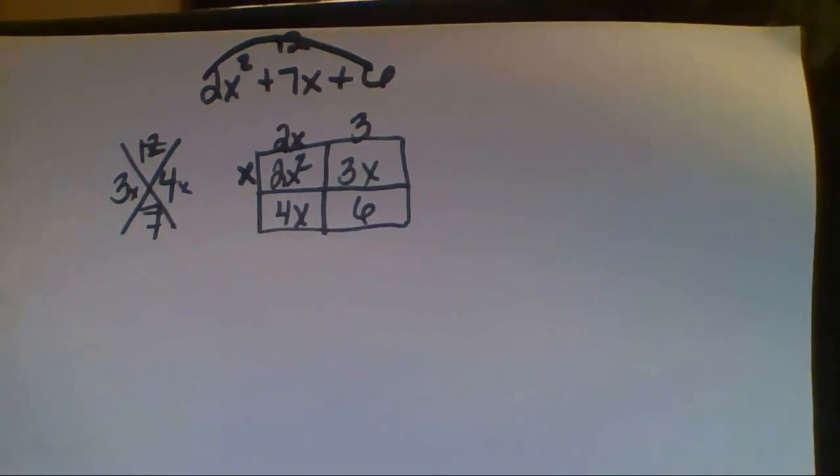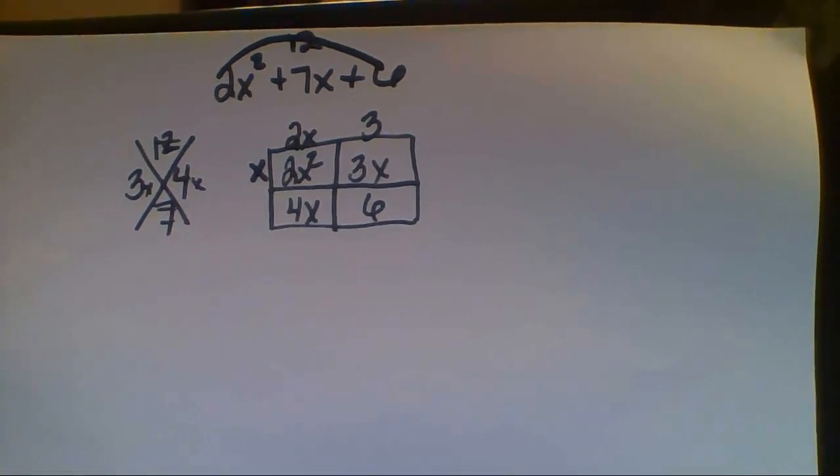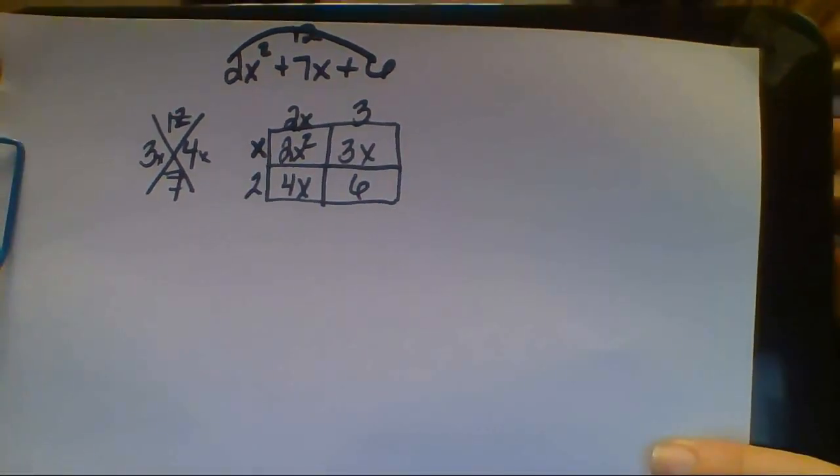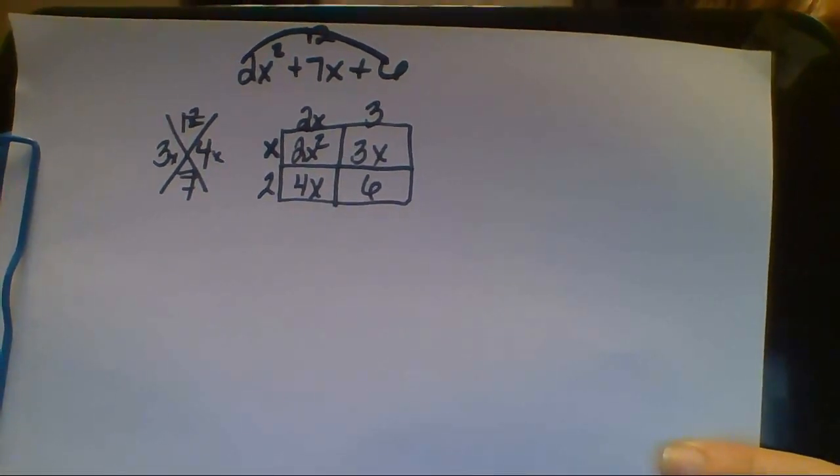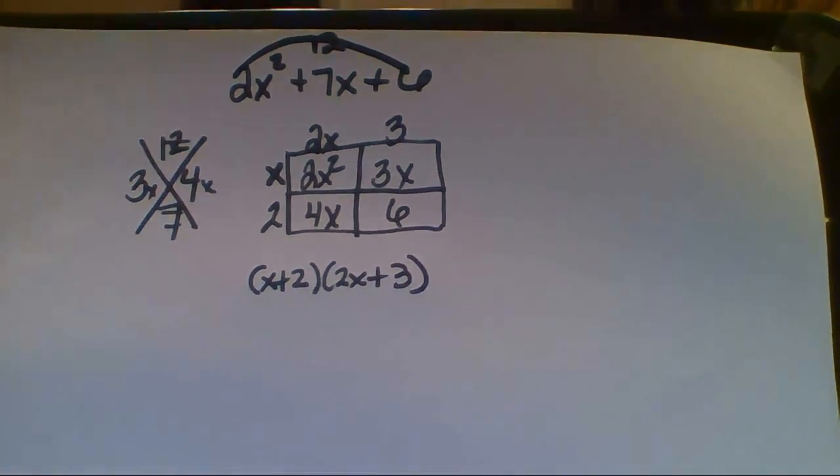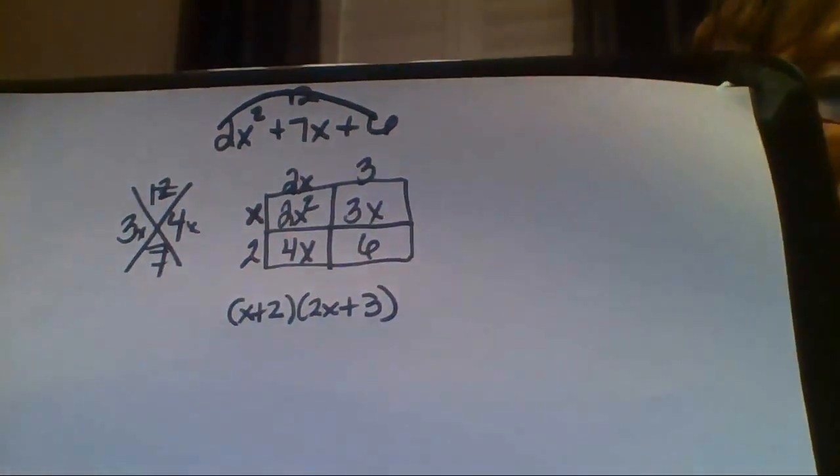So we have 2x, and we see that 2x times 2 is going to give us 4x. And 2 times 3 is 6, so it works. So we've factored our quadratic into x plus 2 and 2x plus 3.